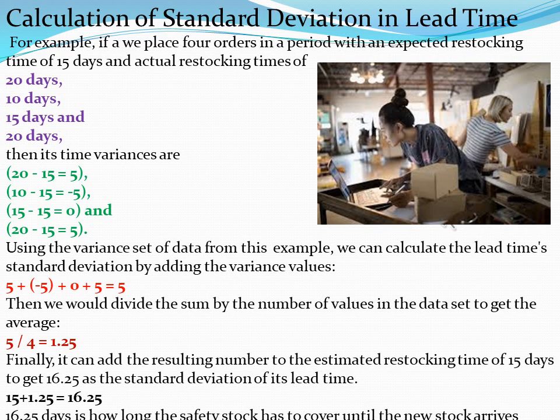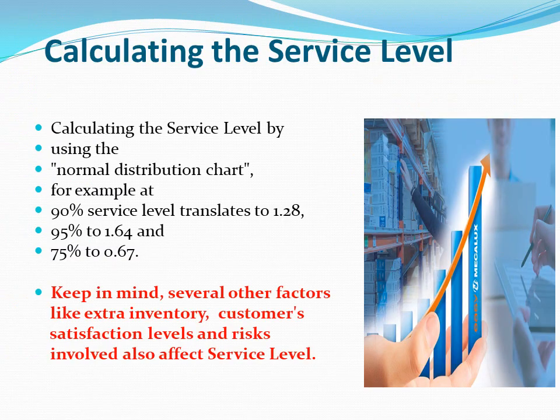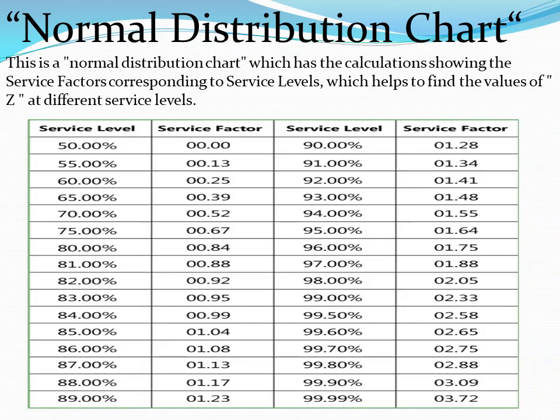So 16.25 days is how long the safety stock has to cover until new stock arrives. Now let's determine the service level factor using the normal distribution chart. For example, a service level of 90% translates to a Z-factor of 1.28; 95% translates to 1.64; and 75% translates to 0.67. You can check the normal distribution chart on the next slide. Keep in mind that several other factors like extra inventory, customer satisfaction levels, and risks involved also affect service level.